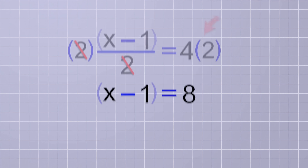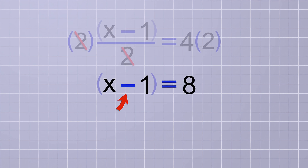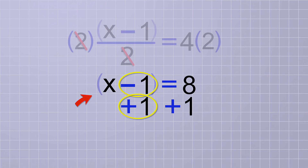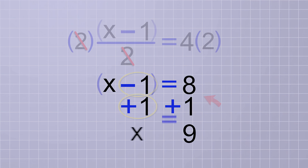Next, we can undo the operation inside the group by adding 1 to both sides. On the first side, the minus 1 and the plus 1 cancel, leaving x all by itself. And on the other side, we have 8 plus 1, which is 9. So in this equation, x equals 9.